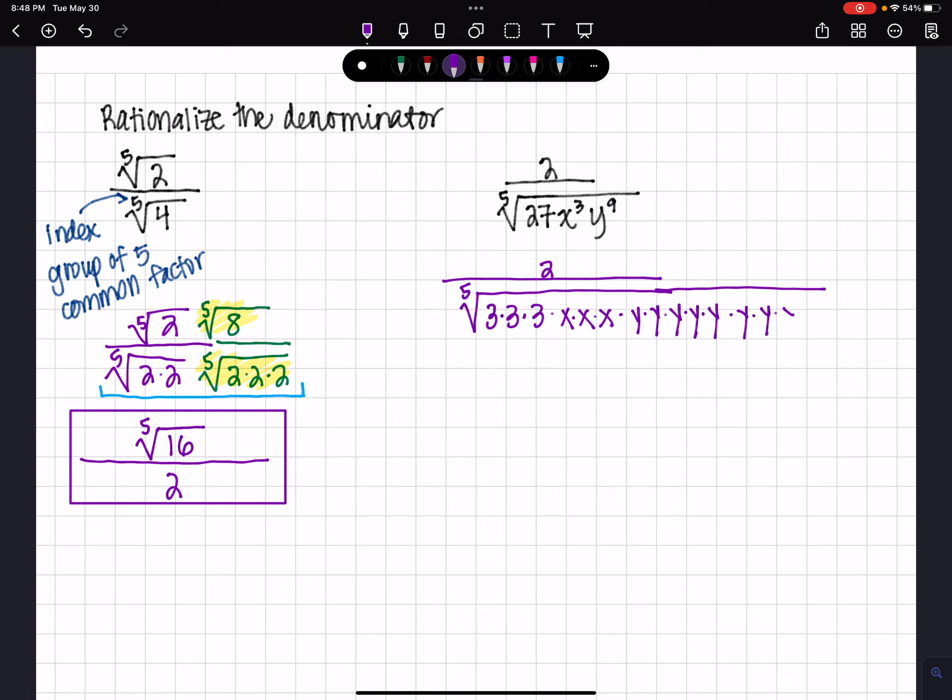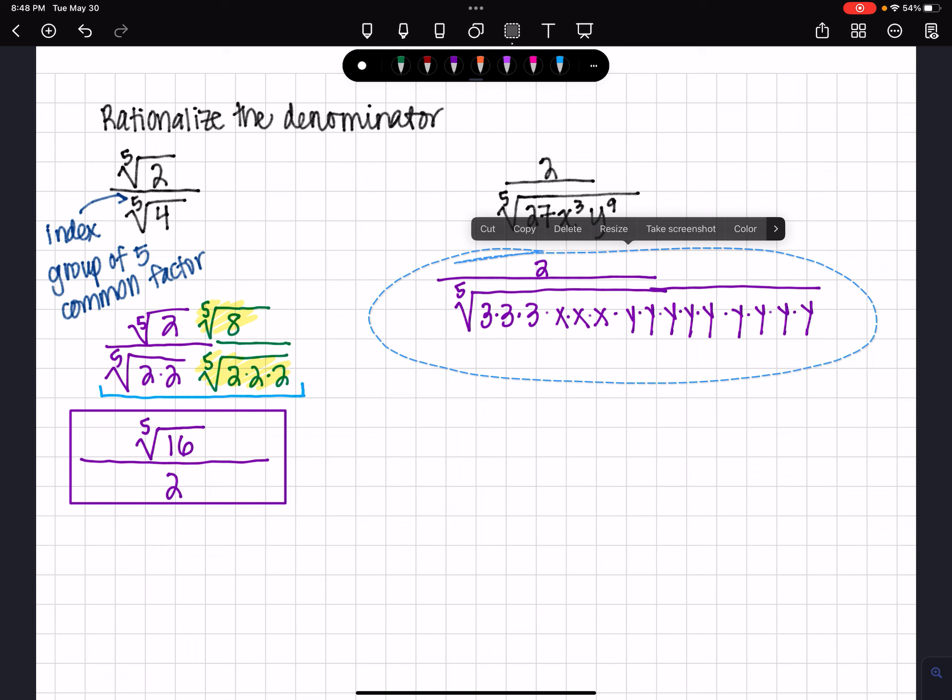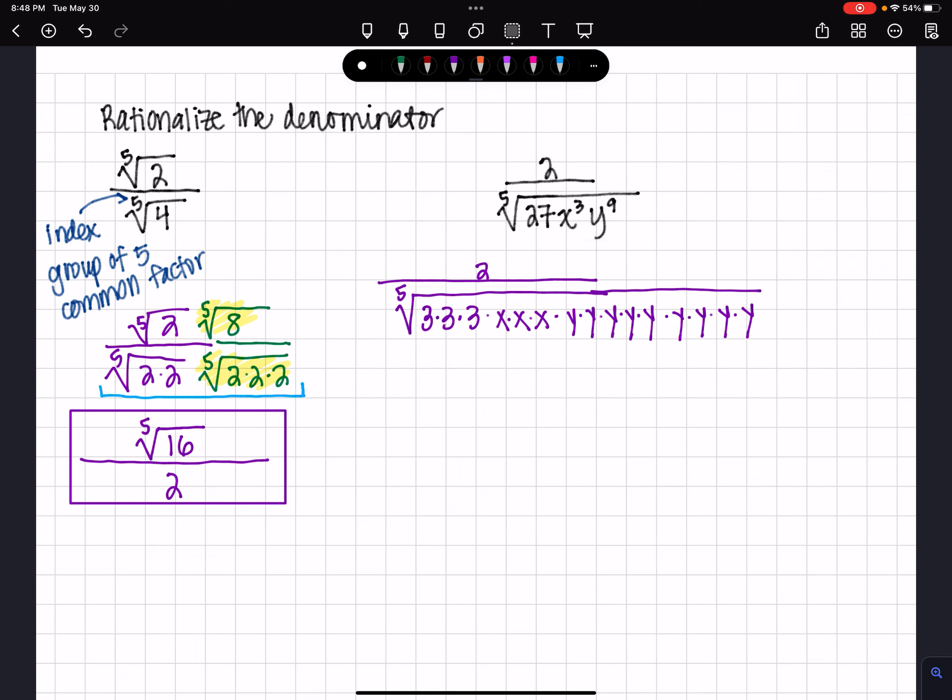6, 7, 8, 9. I believe that's 9. 1, 2, 3, 4, 5, 6, 7, 8, 9. So what would the denominator need for that radicand to be perfect?